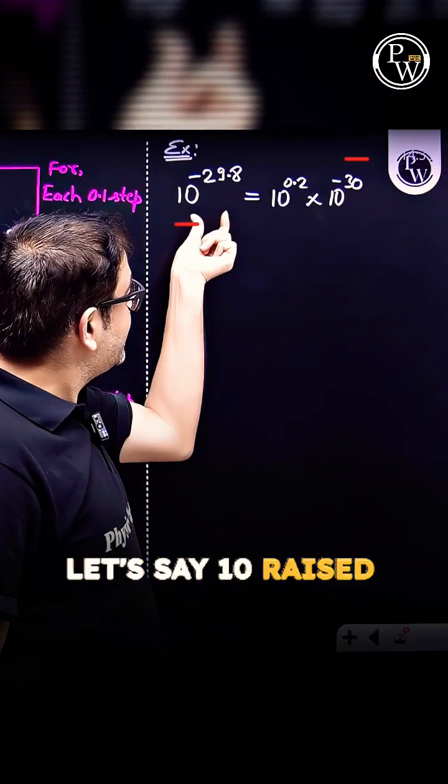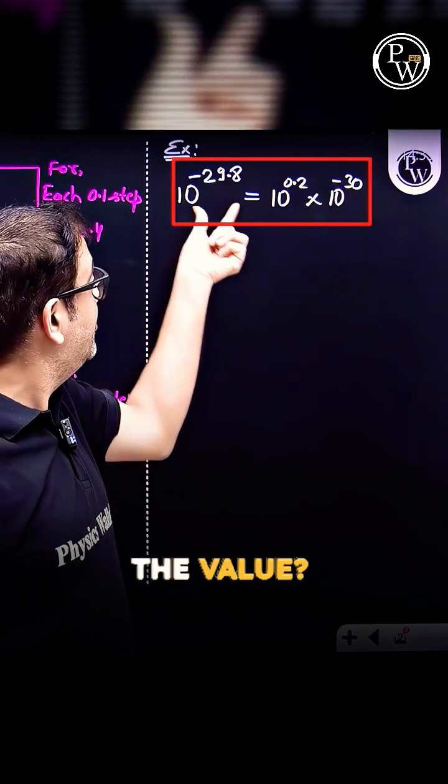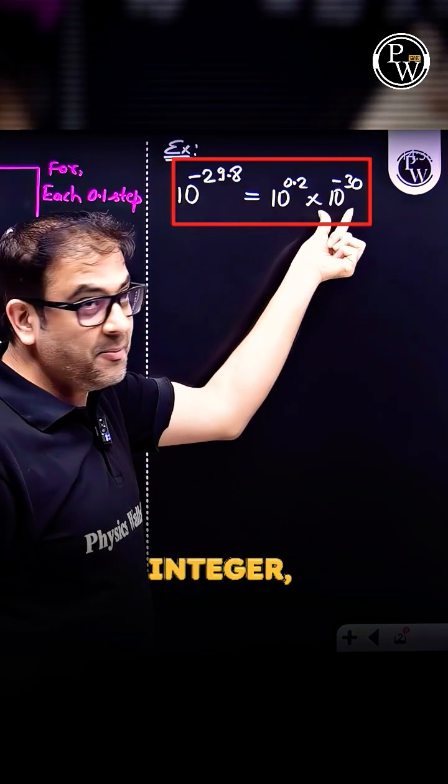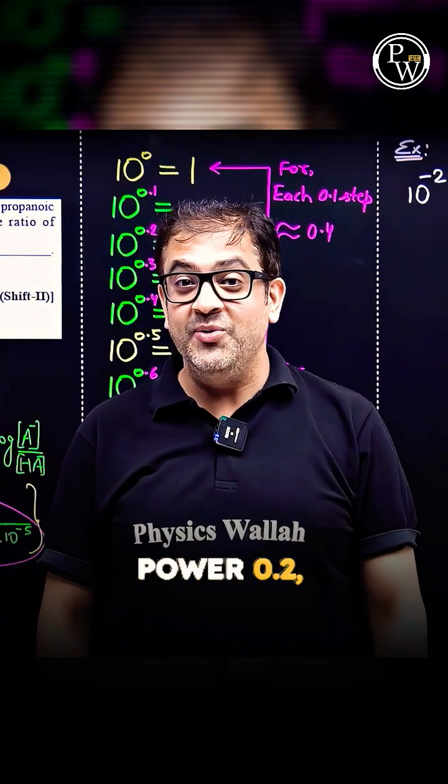Now, let's say 10 raised to the power minus 29.8. You do not have log table. How will you find the value? Go to the closest integer, minus 30. You can calculate 10 raised to the power 0.2 approximately.